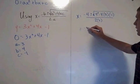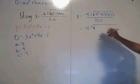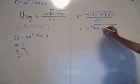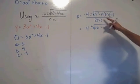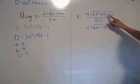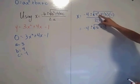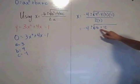This is equal to negative 4 plus or minus the square root of 16 plus 12, because we have 4 times 3 times negative 1, which is negative 12. So we have 16 minus negative 12, which is 16 plus 12.